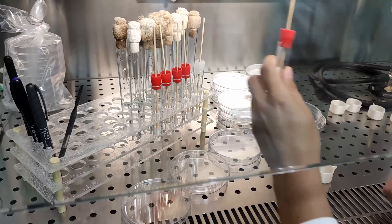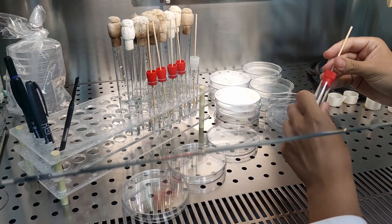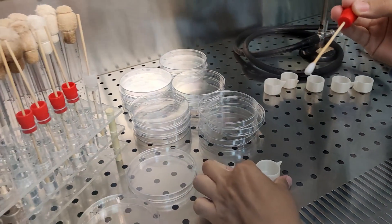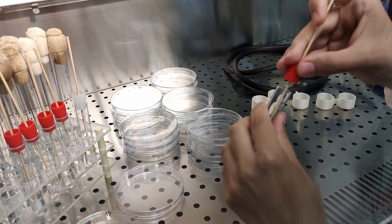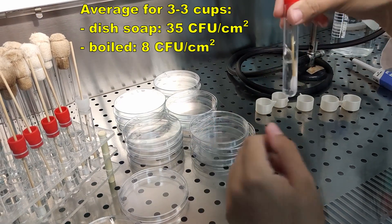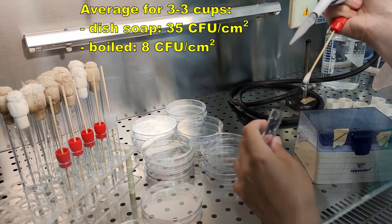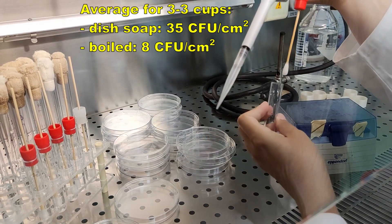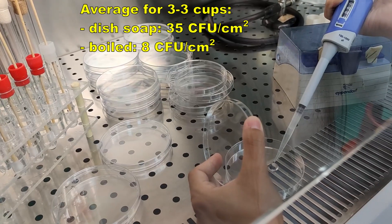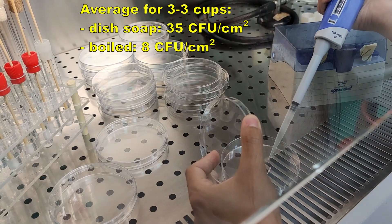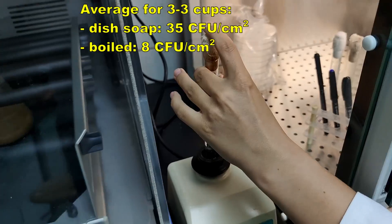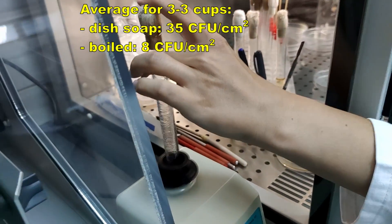And then they started the bacterial test. I'm not really familiar with the procedure, but all I know is the results. Colony forming unit, the CFU per square centimeter, for those cups which were washed under the tap using dish soap was 35 CFU per square centimeter, and for those which were boiled was 8. I thought it would be smaller, but yes, significant difference, and these were average values.